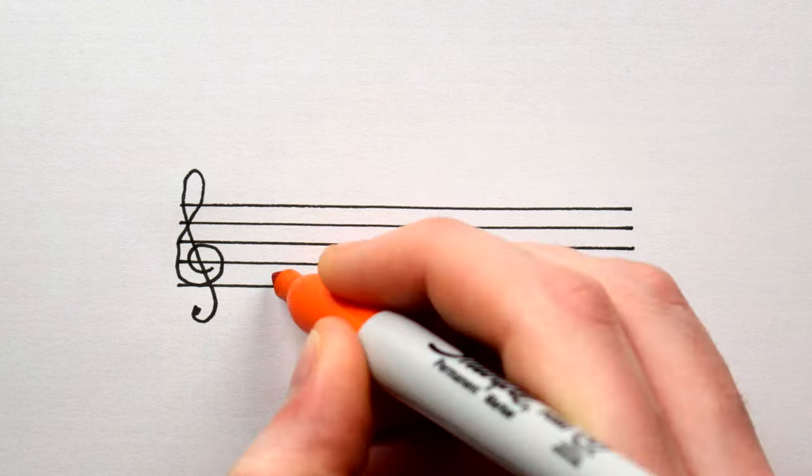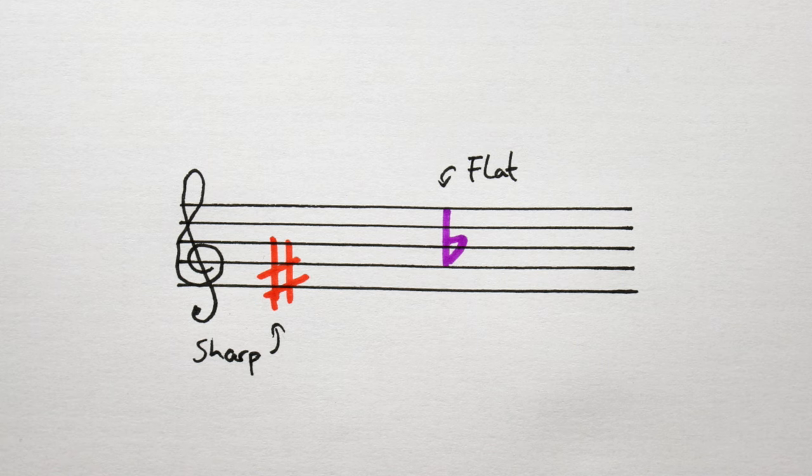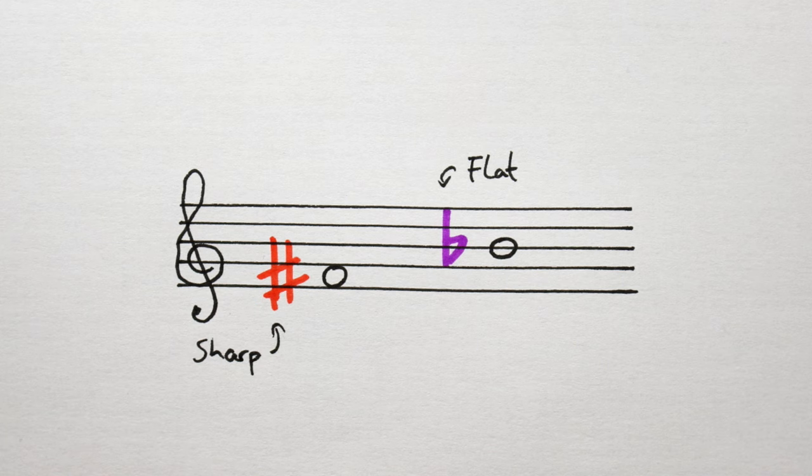Okay, so let's talk about sharps and flats some more, shall we? When a sharp sign or a flat sign is written in front of a note, we call it an accidental.